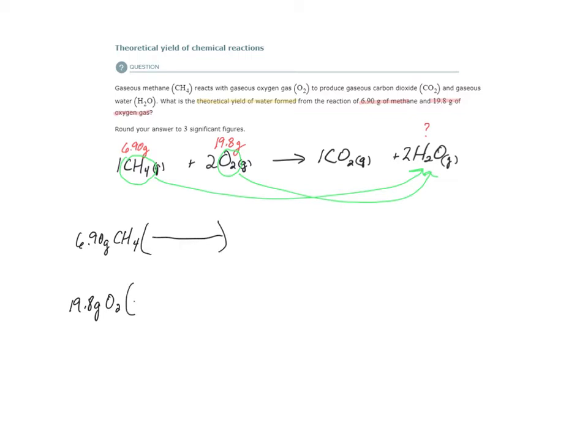The first thing we need to do is convert from grams to moles. We cannot convert from one substance to another, in this case from methane to water or from oxygen to water, except through the mole ratios in this chemical reaction as conversion factors. For those conversion factors to work, I need to be at moles of each of our two starting substances.